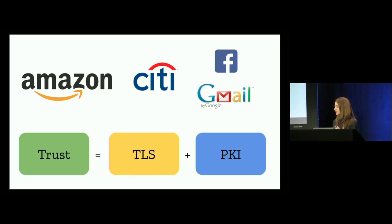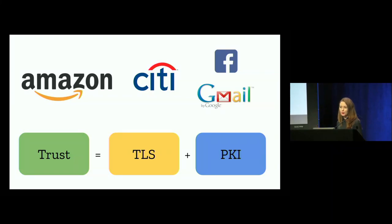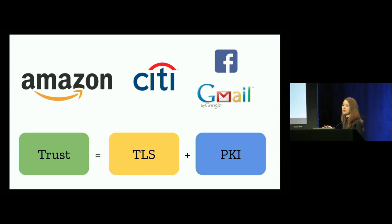I would argue that we trust the web — for some definition of trust — because we have TLS that works in combination with a public key infrastructure, a PKI. Now I know a fair bit about TLS but I've always sort of taken this PKI component for granted. At Mozilla, as a browser vendor, we obviously care a lot about this component because problems in the web PKI mean problems for every single user on the web.